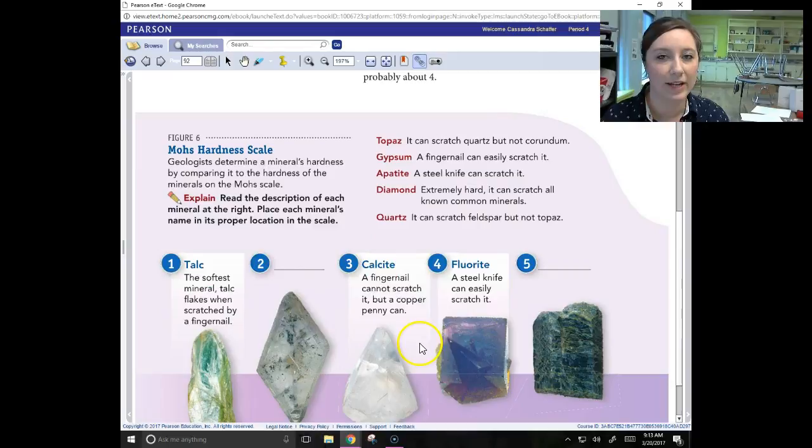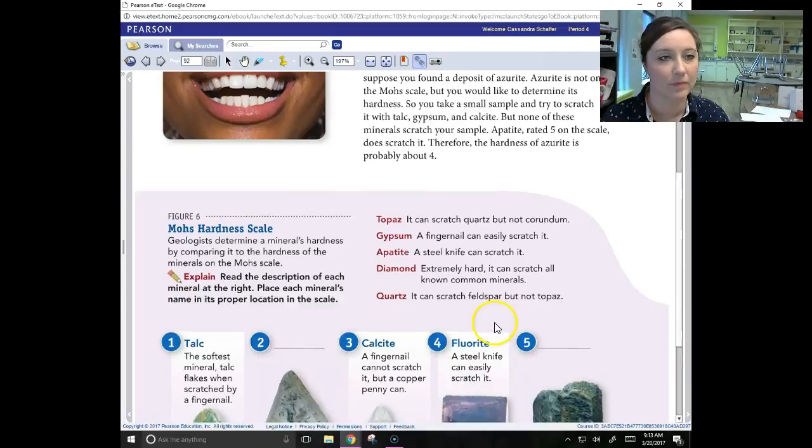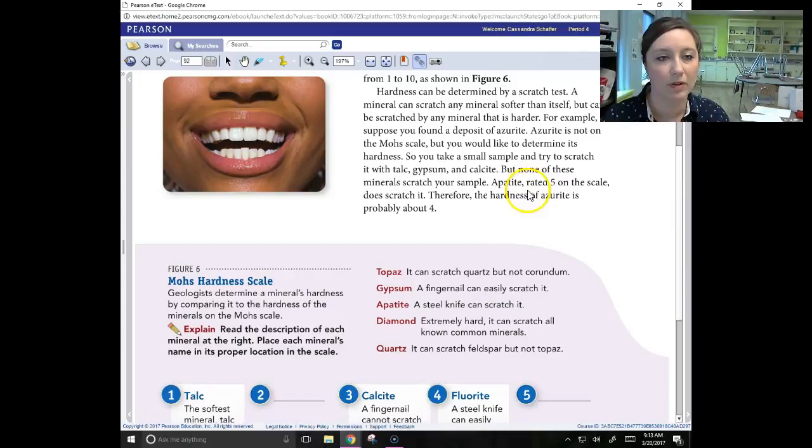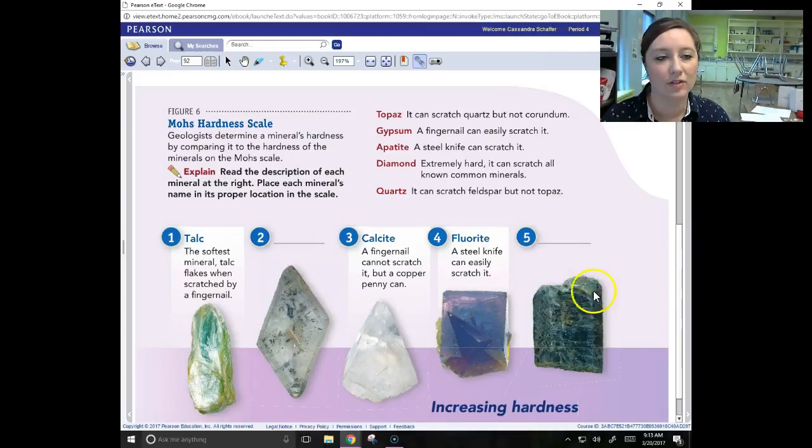Suppose you found a deposit of axorite. You take a small sample and try to scratch it with talc, gypsum, and calcite. Those three minerals won't scratch it, so that tells us it has to be harder than at least a 3. But apatite, rated a 5 on the scale, does scratch it. That would put us at a 4. We also know that apatite can have a hardness of 4 as well.